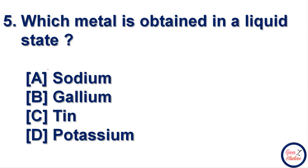Next question: which metal is obtained in a liquid state? We all know that metals are generally solid, but some metals can also exist in a liquid state. Options are sodium, gallium, tin, and potassium. Gallium is the correct answer — gallium is a metal that is obtained in a liquid state.